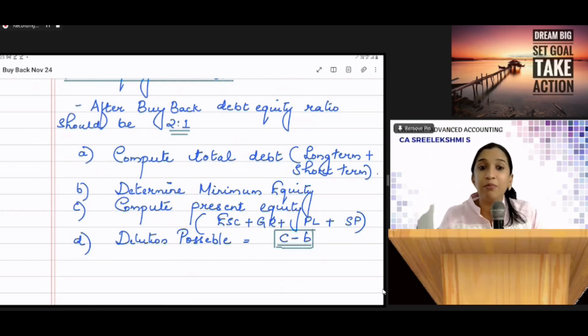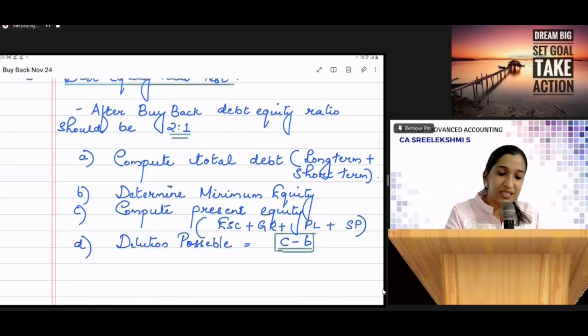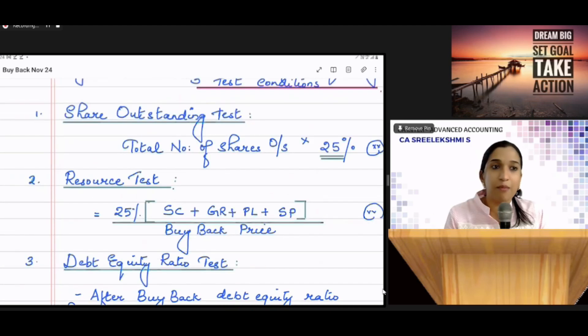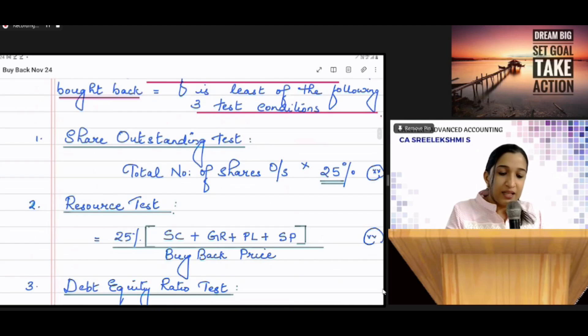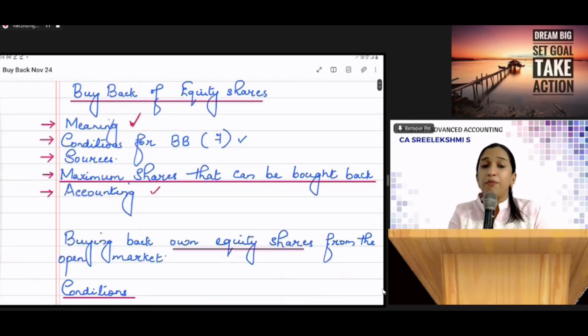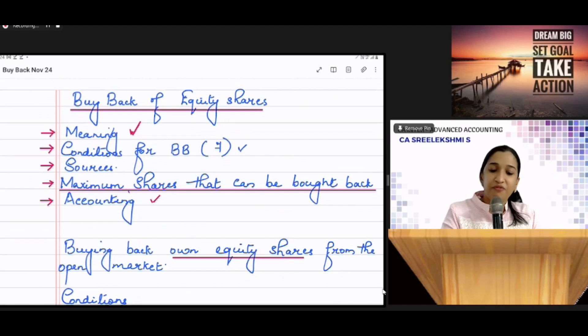So, that is, take the minimum of share outstanding test, the resource test, debt-equity ratio test. That is the number of shares that can be bought back. That is the fourth one. Maximum number of shares that can be bought back. And finally, the accounting entry.